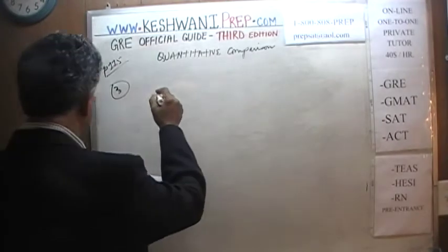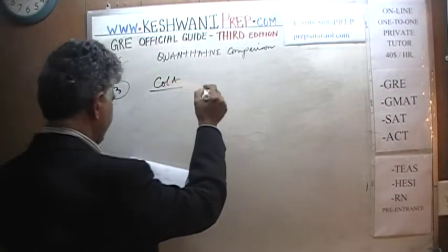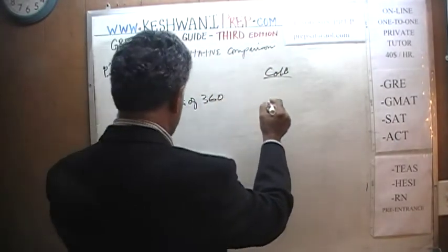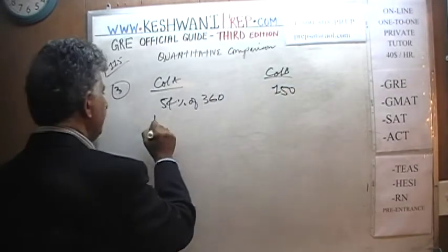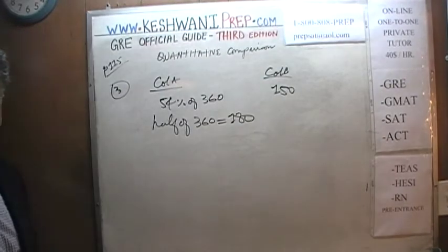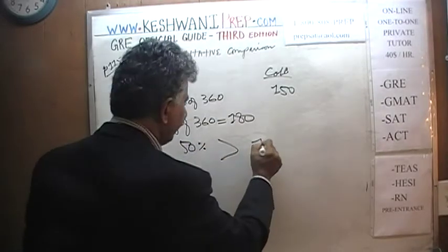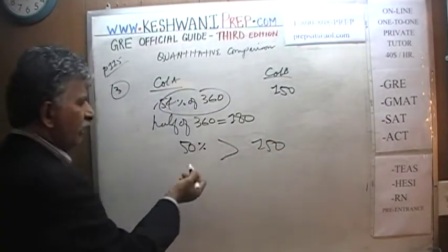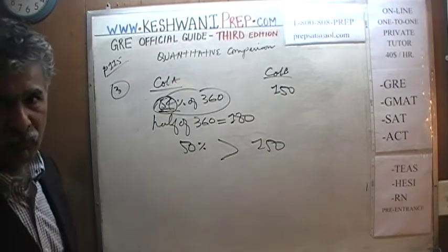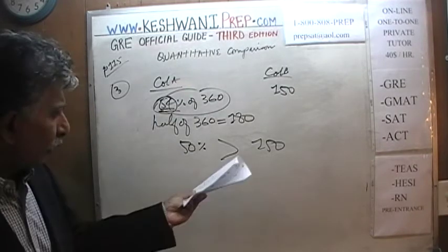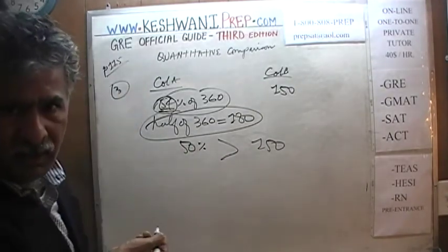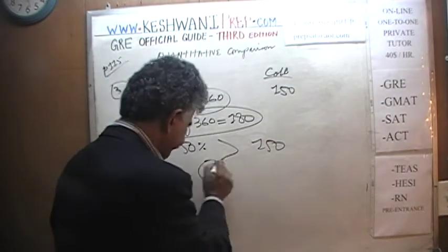Number three. In column A we have 54% of 360, and in column B we have 150. We know that half of 360 is 180. If 50% of 360 is already 180, which is more than 150, then 54% is of course going to be greater. You don't have to waste time figuring out the exact 54%. Just understand that if half of 360 is already 180 — more than 150 — then 54% of 360 has to be more than 150. The answer is A.